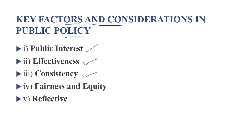ऐसा नहीं होना चाहिए कि policy सरकार के rules या decisions से deviate करे। Another factor is fairness and equity — policies को fairness और equity के साथ implement किया जाए, कोई discrimination नहीं होना चाहिए। साथ ही ये protective discrimination को भी support करती हैं — society के disadvantaged sections को benefit मिलनी चाहिए। Also, public policy should be reflective — ऐसी होनी चाहिए जो society की values जैसे freedom, diversity, privacy, और choice को reflect करे।